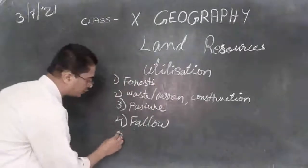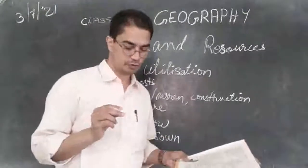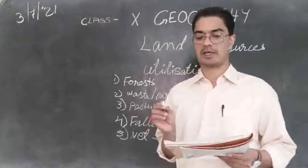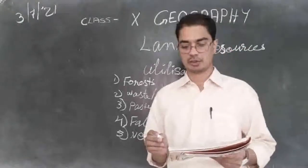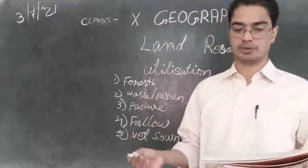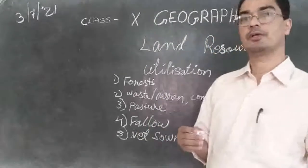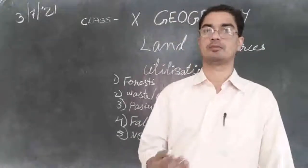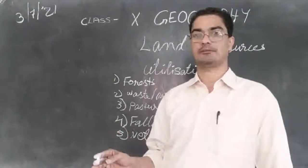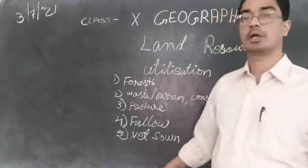Another type is net sown area — the real land that is used for agriculture or farming regularly. Area sown more than once in an agricultural year plus the net sown area is known as gross cropped area. Sometimes, when climate and conditions are good, farmers cultivate more than once in the same place — one crop, two crops, or even three crops in a year. That area added to the net sown area which is cultivated regularly is altogether known as gross cropped area — the total area used for regular cultivation.